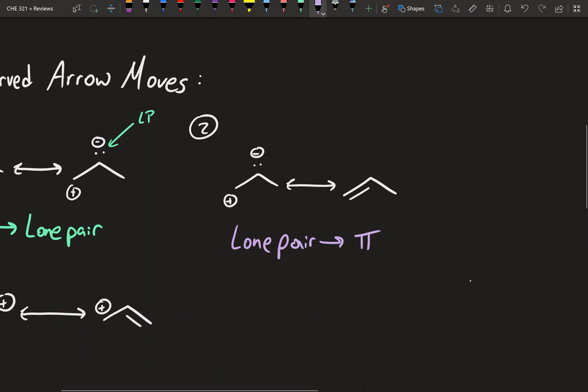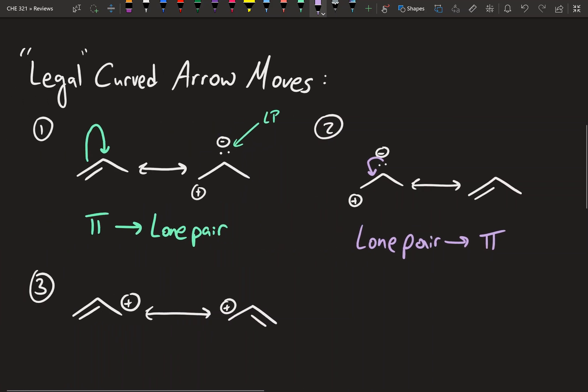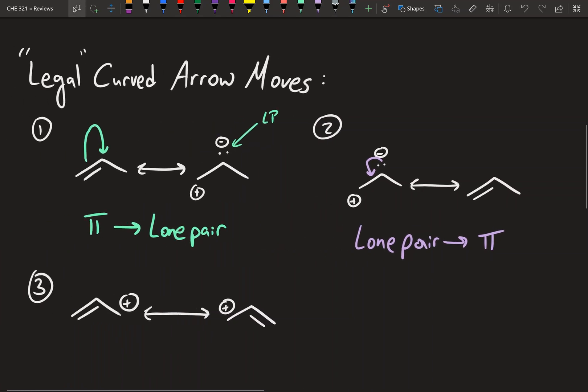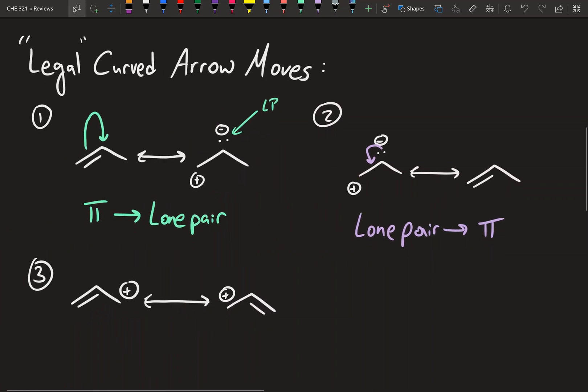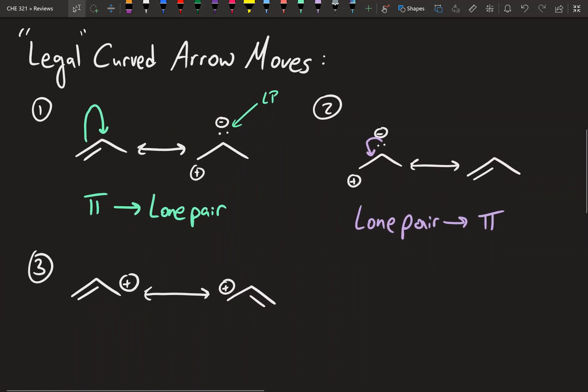The second legal move is lone pair to pi bond. We start with our lone pair, take it, go to the pi bond and to this bond right here, and we form a pi bond. So that's number two.